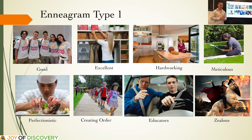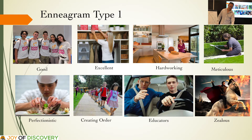Ones are activists who can help introduce the rule of law and religion to places where there are none, so that the human spirit can shine through and make a difference. That's Enneagram Type 1 — score on a scale of 1 to 5 how well that resonates with you.